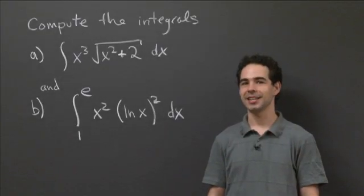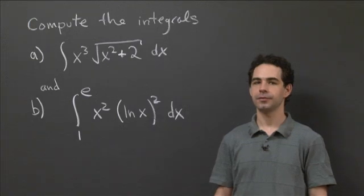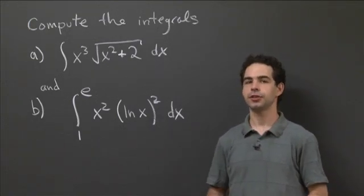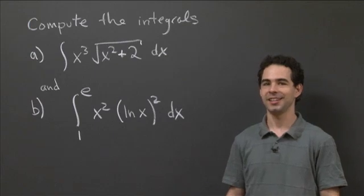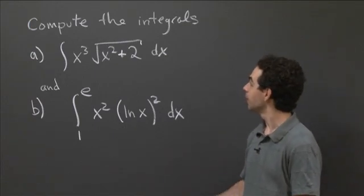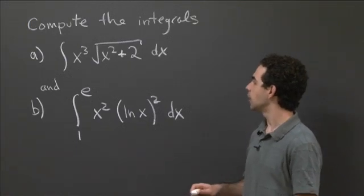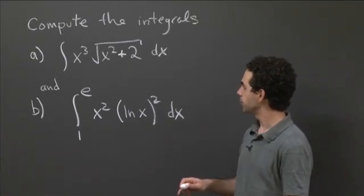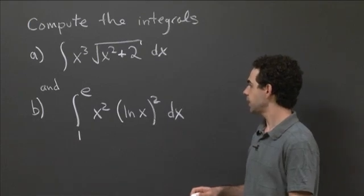Hi. Welcome back to recitation. We've been talking about a bunch of different integration techniques. Here are a couple of examples on which you can try and pick out the right technique to compute these two integrals. So the first one is the indefinite integral of x cubed times the square root of the quantity x squared plus 2 dx.